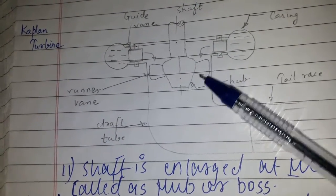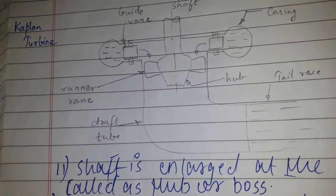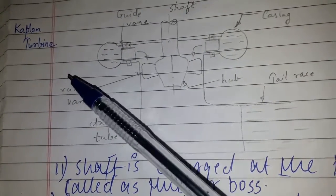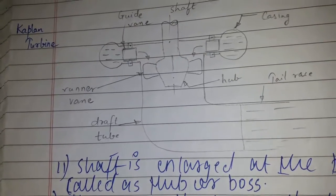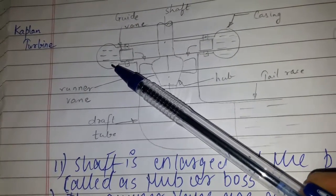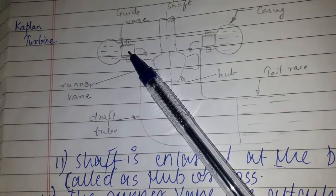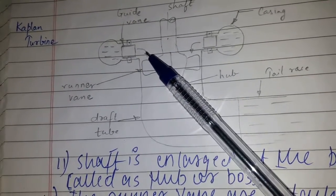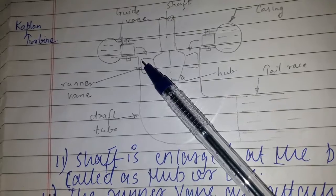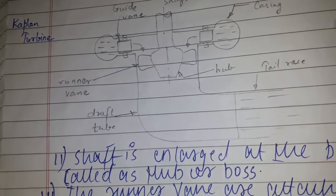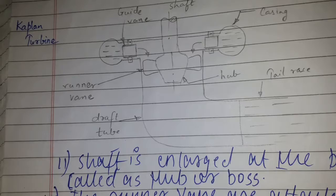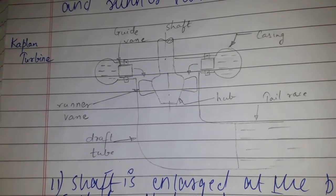Regarding the working of Kaplan turbine, the water from the pen stock enters the casing and into the guide vane. The water from the guide vane turns 90 degrees and enters the runner vane. Kaplan turbine has purely axial flow.